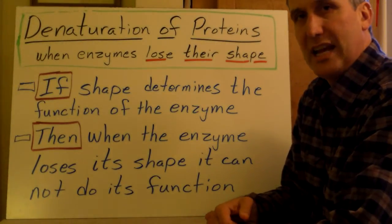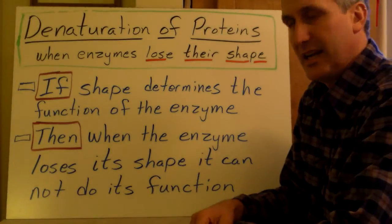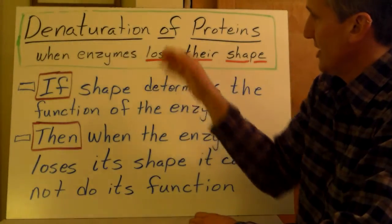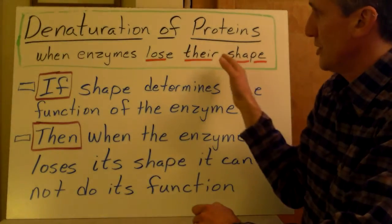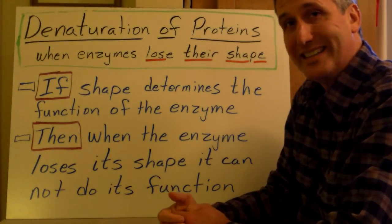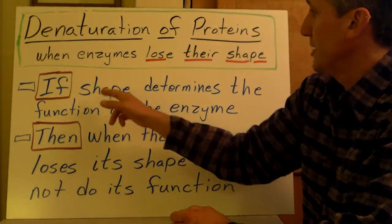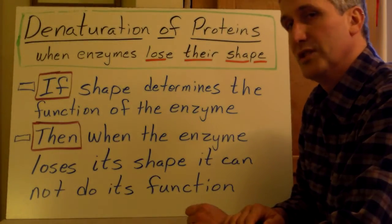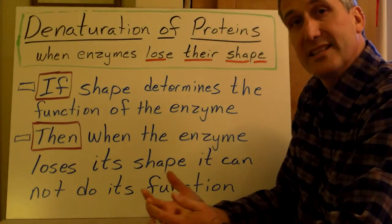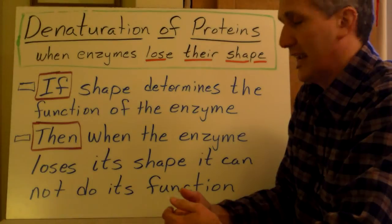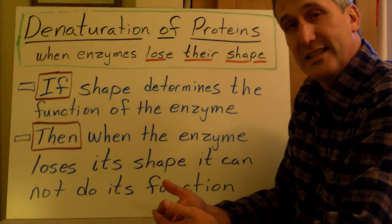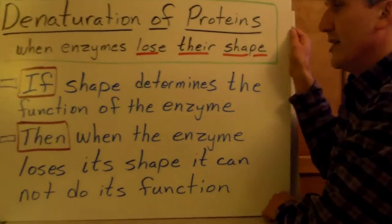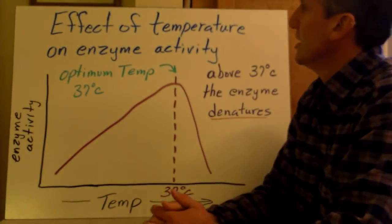So we're talking about shape. When an enzyme loses its shape, it's called becoming denatured or denaturation of proteins. When enzymes lose their shape, that's called becoming denatured. So if the shape determines the function of the enzyme, then when the enzyme loses its shape, it cannot do its function. So when an enzyme becomes denatured, it loses its shape and that changes the active site and does not allow the enzyme to perform its function.